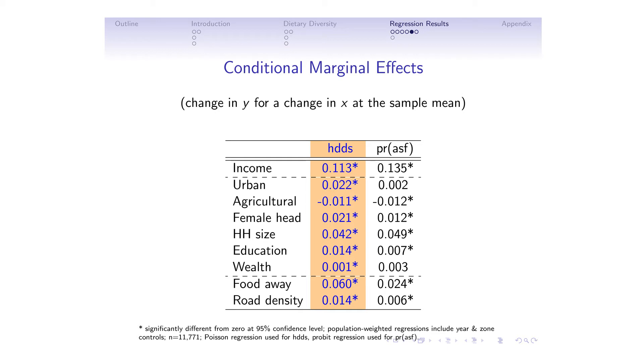What might some of those things be? In a more fully specified model we look at things like income, but also urban residents, agricultural households, female-headed households, household size, education, wealth, food consumed away from home, and the density of the road network in the household vicinity. These are also statistically significant contributors. We can't look for a single factor to move the needle on dietary diversity or animal-sourced food consumption — all of these things work in concert and are important together in leading to improvements.